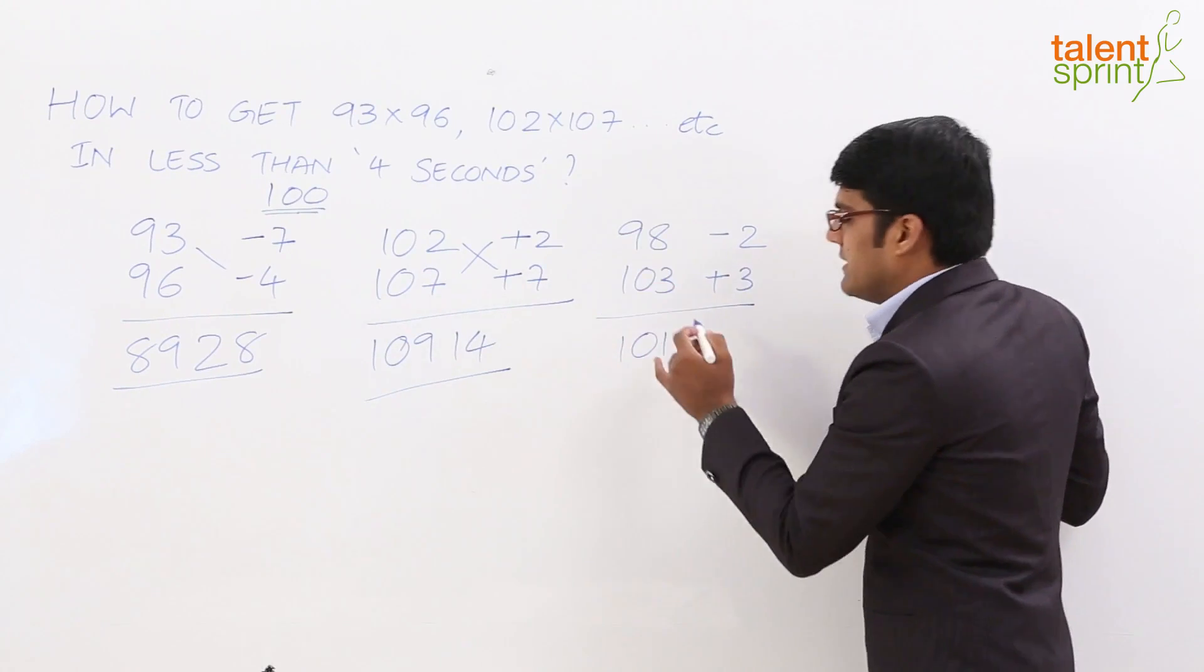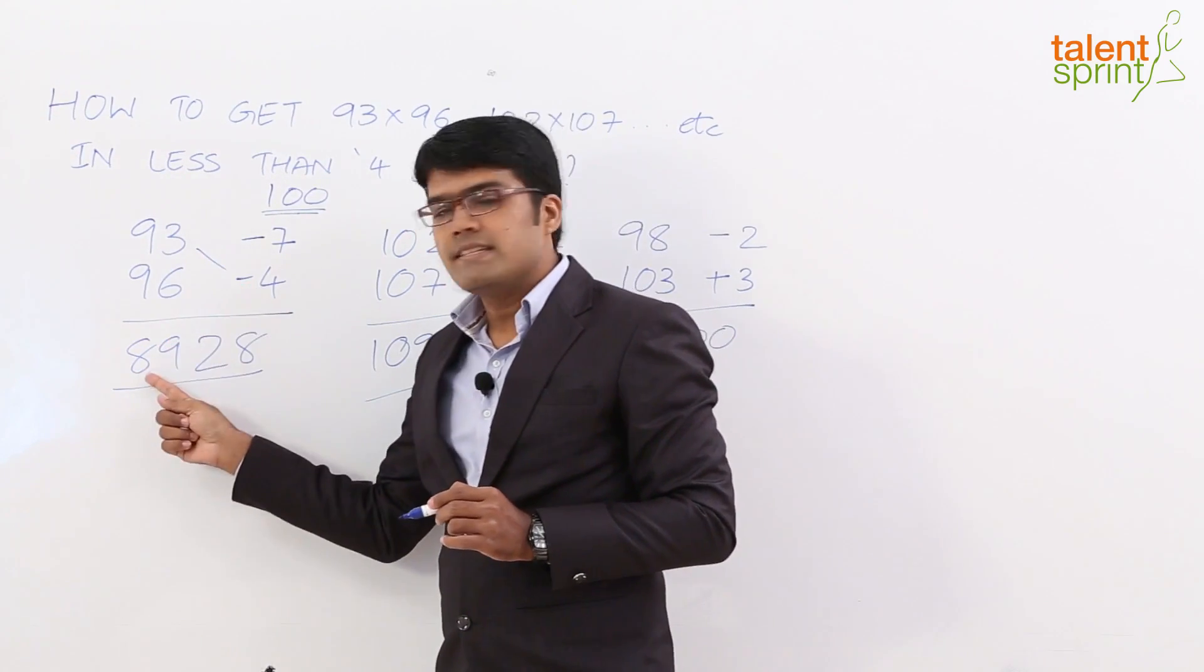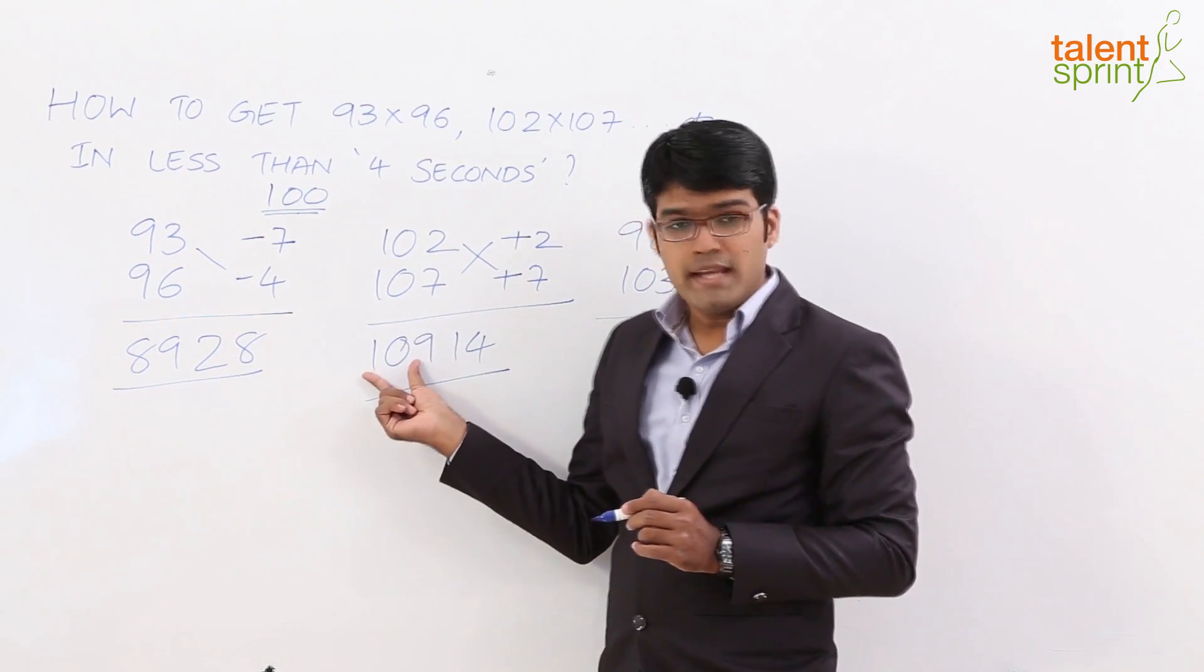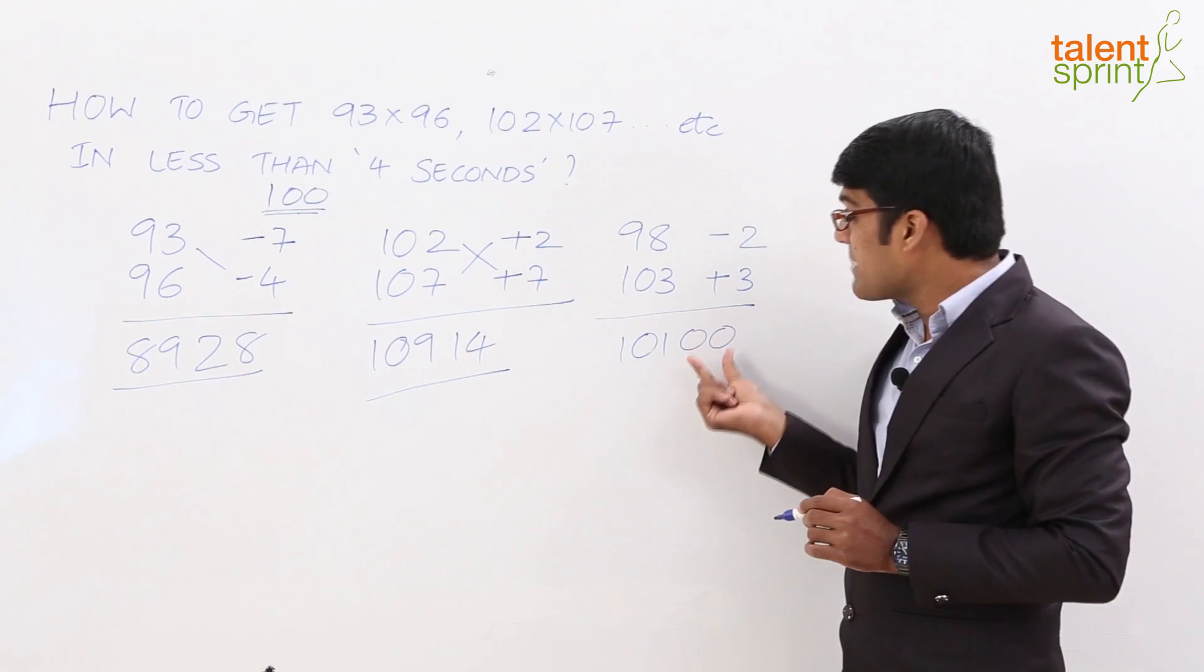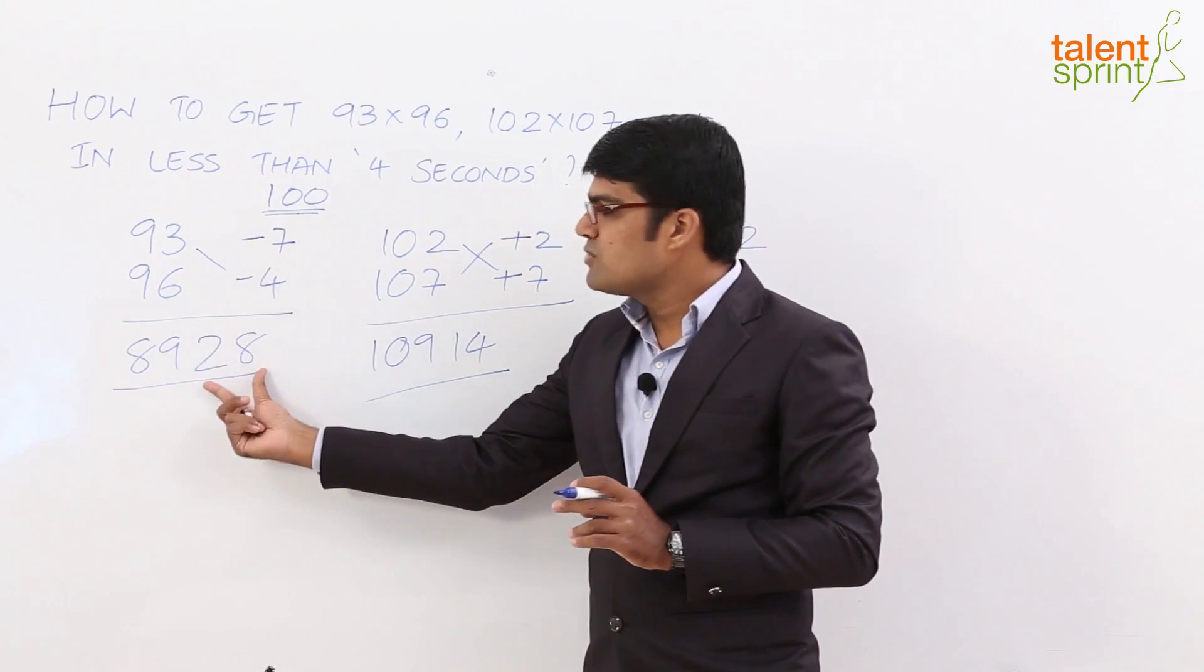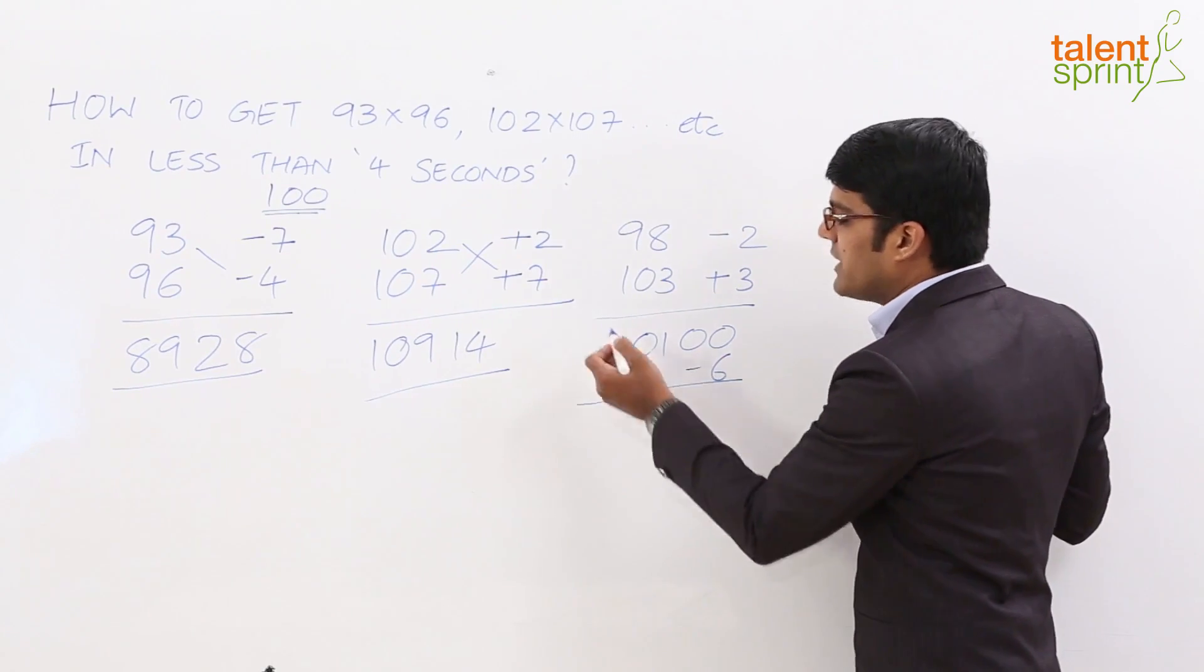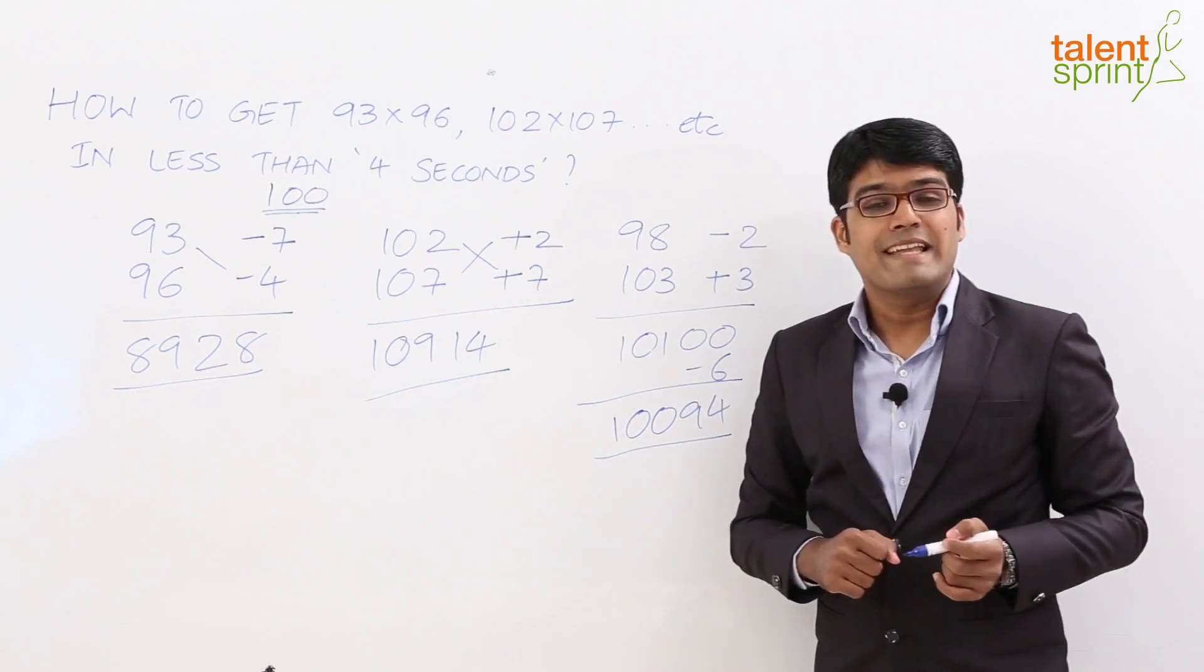See if you understand the concept behind this method, we always have 2 zeros followed by 101. Like in the first case, we have taken 89. 93 minus 4 is 89 and followed by which were 2 zeros. To these 2 zeros, when we add 28, we get the final answer as 8928. Same was the case in the second example. 102 plus 7 is 109 and was followed by 2 zeros. Now we simply add 14 here. But in this case, since we are getting a negative value, we have to subtract that from the value 10100. So the whole idea is when you are taking the base as 100, after the first step, we will have 2 zeros after that. 8900 plus 28, 10900 plus 14. But in this case, it is 10100 minus 6. So just subtract 6 from this and you get your answer. So 10100 minus 6 would be 10094. So that is your answer of 98 into 103.